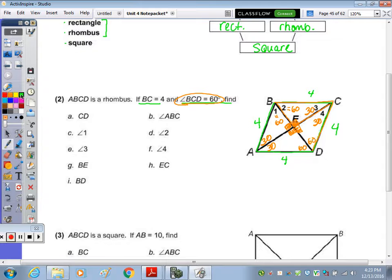Now to go over, CD we have marked as four. Angle one, right here, we have noted as 60 degrees. Angle three, right here, is 30 degrees. BE, we don't have anything there yet. BD, we don't have anything there. Angle ABC, so this whole angle together, 60 and 60, is going to be 120. Angle two we have marked is 60, and angle four we have marked is 30. And now we need to look at the diagonals.